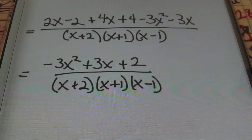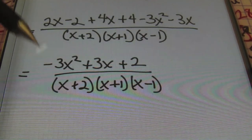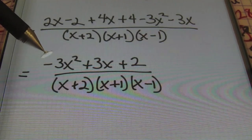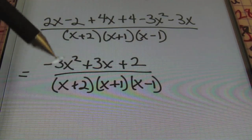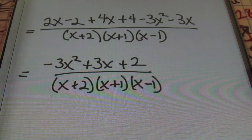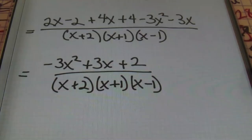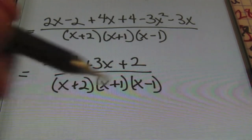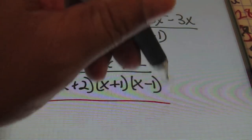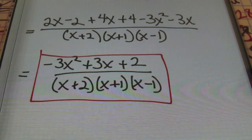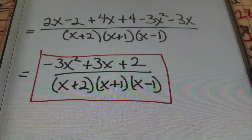This is the answer. There's nothing else you can do with this. There will be times that you'll need to factor the numerator because sometimes it will cancel with something in the denominator. But for this particular problem, there's really nothing that's going to happen, so this is the answer. Done and done.